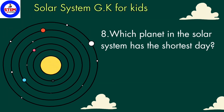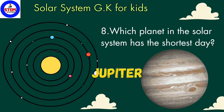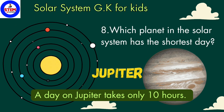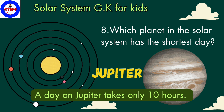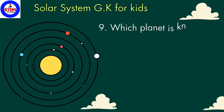Eighth question: which planet in the solar system has the shortest day? The answer is Jupiter. Out of all planets, Jupiter has the shortest day. A day on Jupiter takes only 10 hours, whereas on Earth a day takes 24 hours.